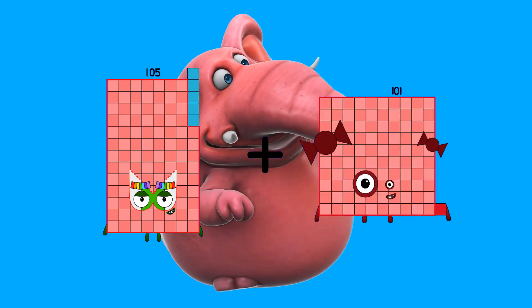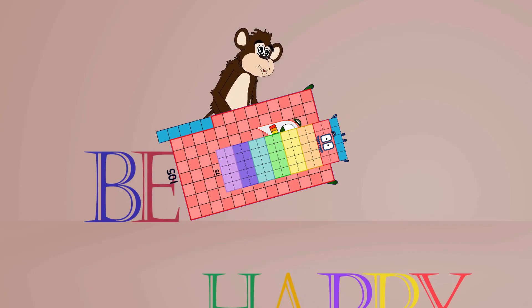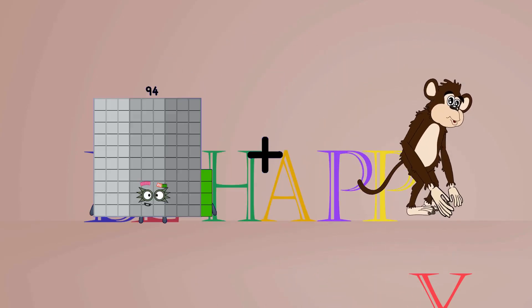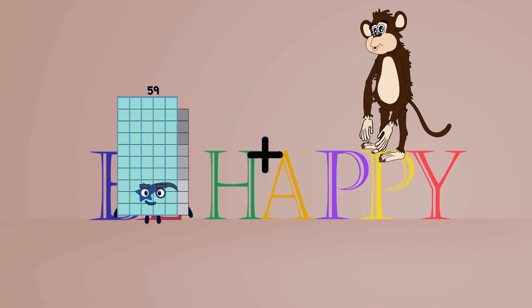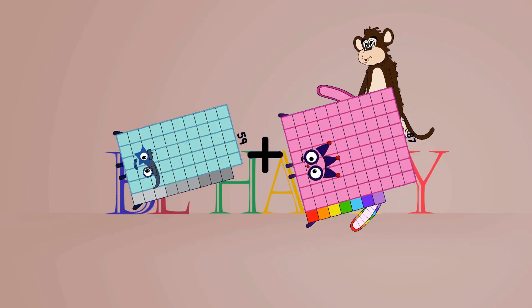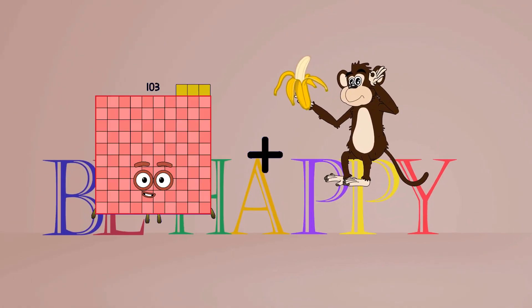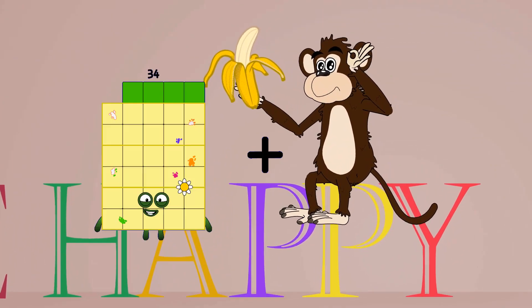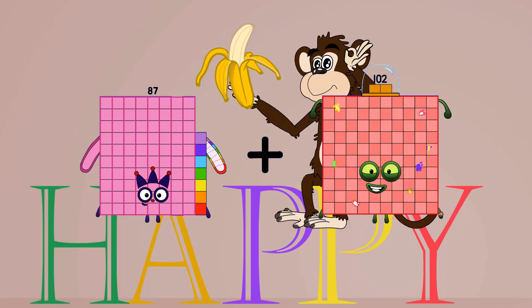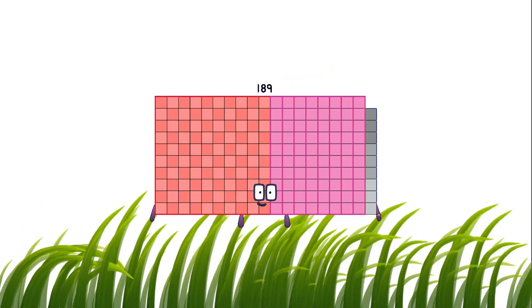105 plus 75 equals 180. 59 plus 87 equals 146. 87 plus 102 equals 189.